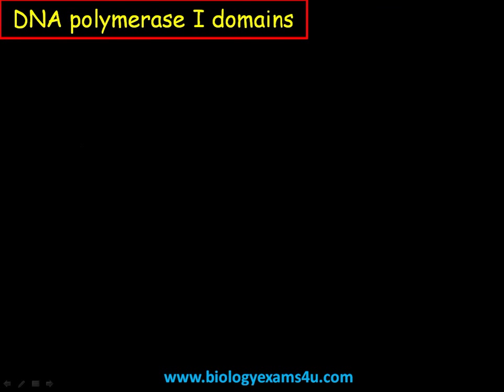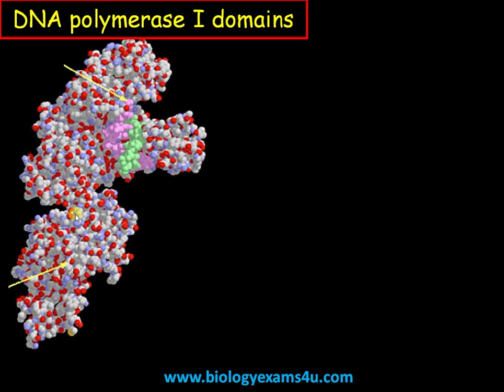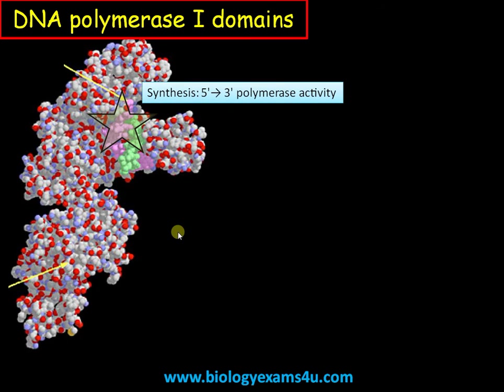In order to understand it clearly, we should first know the domains of DNA polymerase I. This is a structure of DNA Pol I from the Protein Data Bank, and there are three domains. The first domain is involved in synthetic activity — 5'-3' polymerase activity — that is common to all DNA polymerases, meaning the addition of nucleotides to the growing strand.